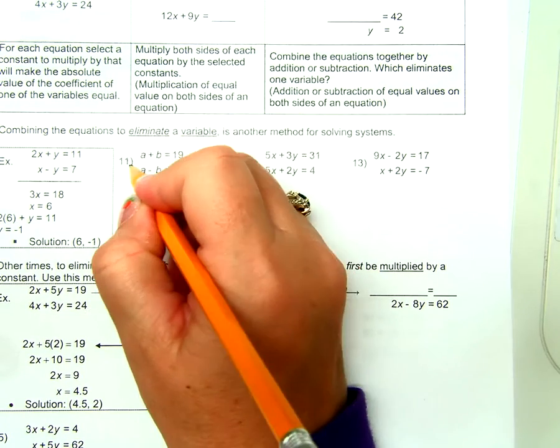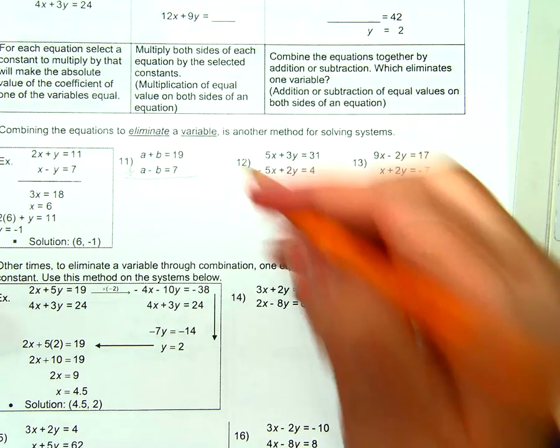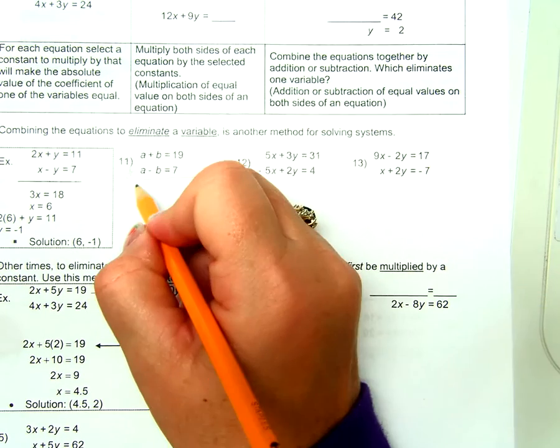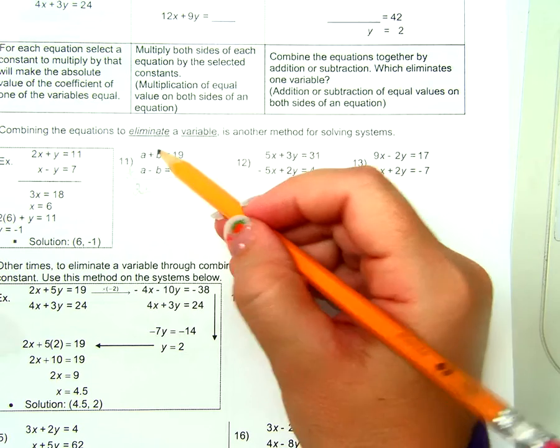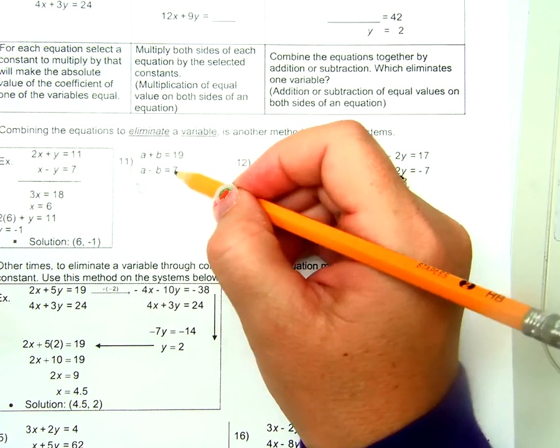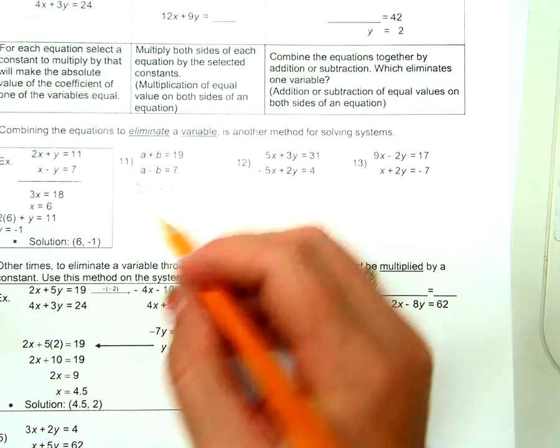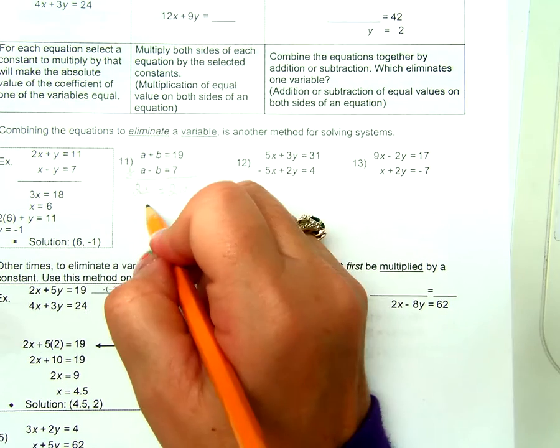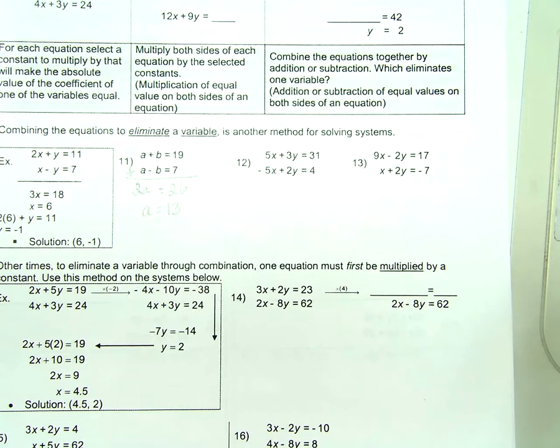And what I mean by that is like this. We're going to combine the two equations. What is A plus A? 2A. What is B plus negative B? 0. What is 19 plus 7? 26. 2A equals 26? A equals what? Oh my goodness, I just skipped a step. I didn't divide both sides by two. Not everybody can skip that step yet. If you can skip that step, I'm giving you permission to skip that step. You know how I feel about showing your work. I want you showing your work.